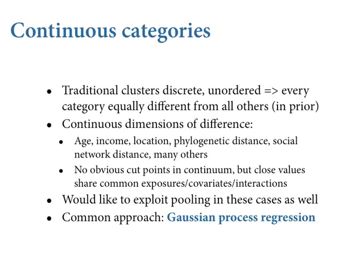There's no dimension in which any one cluster is more similar to another. That throws away information, because you know before the data arrive that 18-year-olds and 19-year-olds have more common exposures than either does with, say, 40-year-olds. You want to pool more between proximate age classes than between distal ones. So we need some extension to continuous categories — and luckily, this exists, and it's been around for a long time.